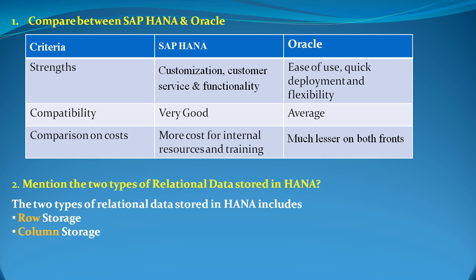SAP HANA is completely customized for client-server functionality, but Oracle is much easier to use, quick in deployment, and highly flexible. SAP is trying to make SAP HANA more flexible as well. For compatibility, SAP HANA has extraordinarily good compatibility and Oracle is not bad either. For cost, Oracle has a much lower cost compared to SAP HANA because most of SAP HANA's cost goes towards internal resources and training.